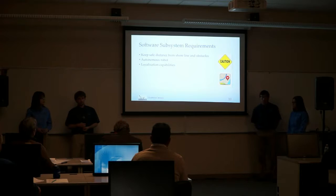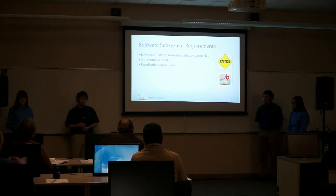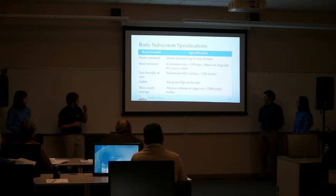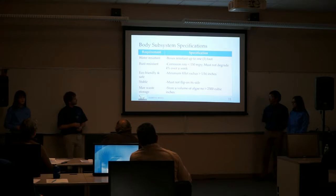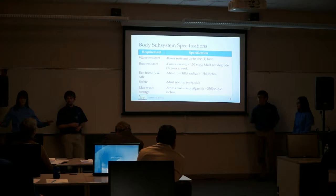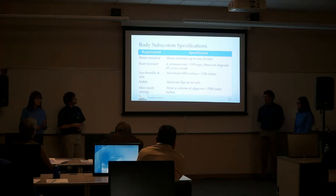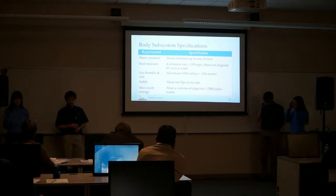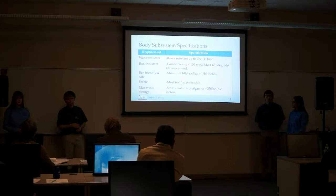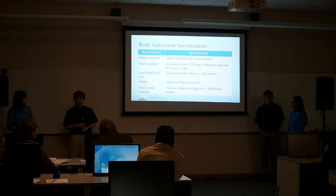Each requirement has a corresponding specification. For water resistance, we'll submerge the robot one foot under the surface and test if any water goes inside the electronic or motor boxes. For corrosion resistance, materials must have a corrosion rate less than 150 milli-inches per year, and we also want materials to degrade no more than 4% over the course of a week. For safety, we want rounded edges with a minimum fillet radius of 1/16th of an inch.